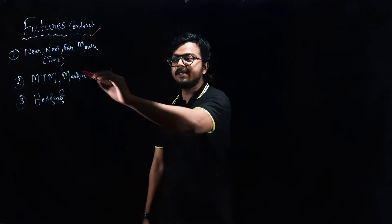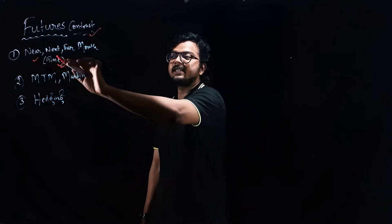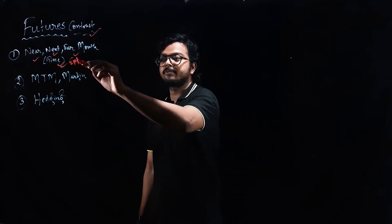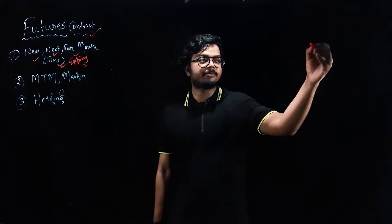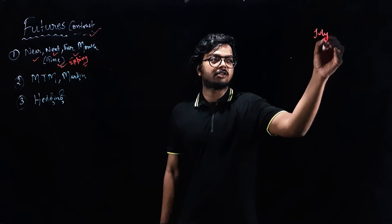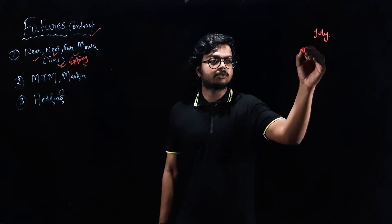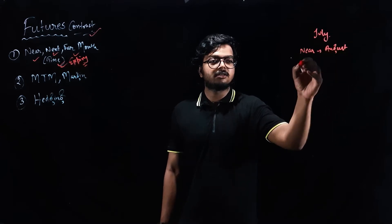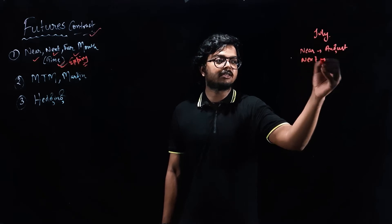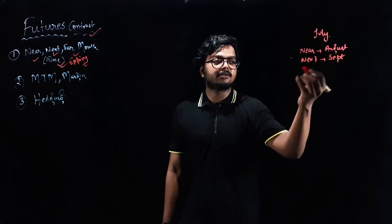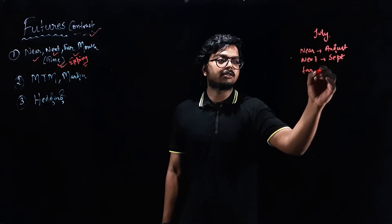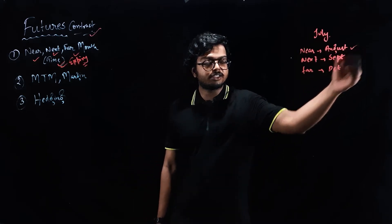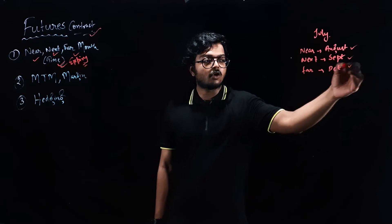For futures, the time is generally near month, next month, and far month. These are the expiries. Say for example, the current month is July. So the near month would be August, then the next month would be September, and the far month would be October. So you can buy a futures contract either of August, September, or October.